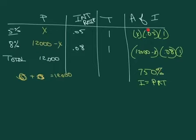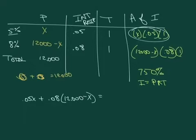So the amount of interest is based on the amount at this one and the amount on that one. So we're going to have .05x from here plus .08 times 12,000 minus x here equals 750. There's your equation right there.